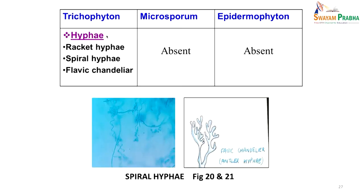In Trichophyton the hyphae may have special structures — racket hyphae, spiral hyphae, or favic chandelier appearance — while in Microsporum and Epidermophyton these special appearances are not seen. That is another feature by which one can diagnose these fungal infections. It is important to diagnose to the species level because different species have different sensitivity to antifungal agents, and we need to know how long treatment will take. Trichophyton rubrum is the notorious species known to take a lot of time to treat and is resistant to many antifungal agents.